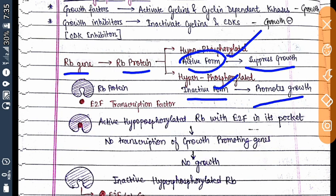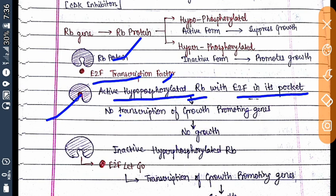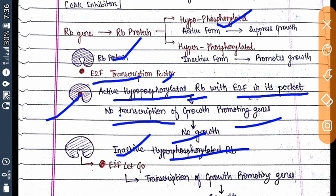Here is a diagrammatic representation of how the RB protein works. There is a transcription factor called E2F. When the RB protein is hypophosphorylated — that is, in its active form — E2F binds to the pocket of the RB protein. This prevents transcription of growth-promoting genes, so there is no growth. When RB protein is hyperphosphorylated — inactive form — E2F does not bind to the pocket, leading to transcription of growth proteins and promoting growth.